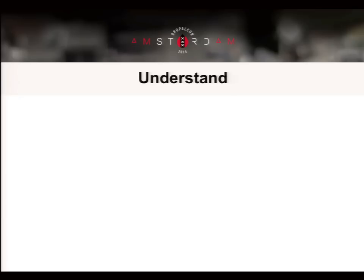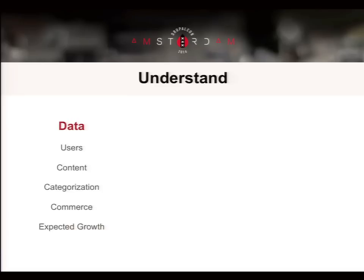I break down the understanding into three areas. The first is data — what are you storing inside of Drupal? The users, the content, the categorization. Sometimes you might have 100,000 pieces of content and maybe 40,000 taxonomy terms, but when you're cross-categorizing content with terms, you end up with millions of rows in the database. At that point, do not use the taxonomy index table. You need to understand the kind of data you're storing, how much of it there is, and how complex the usage of that data becomes.